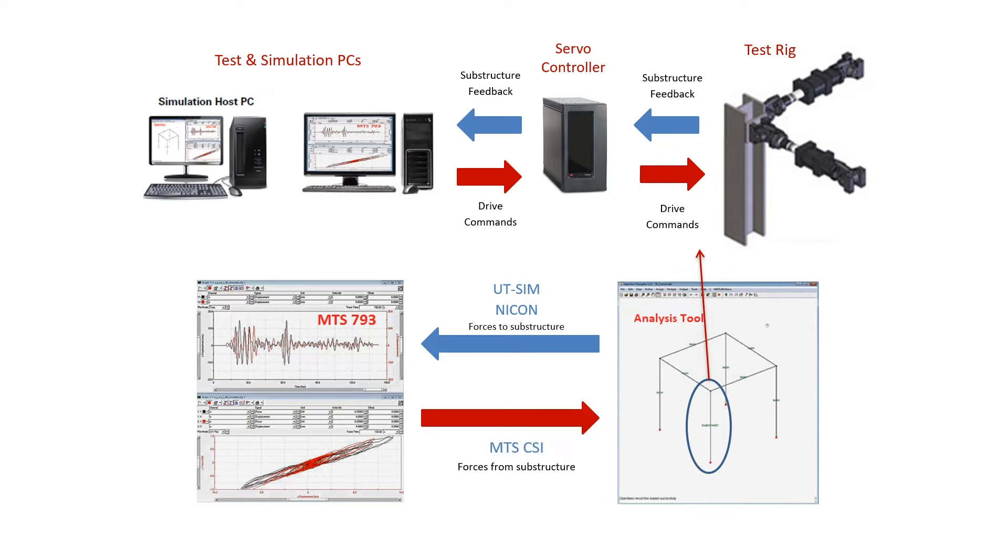The final software piece is the MTS Computer Simulation Interface, known as CSI for short. CSI is another middleware program that is used to communicate data and commands from the MTS 793 control software back to the modeling program. The communication between the model and the MTS 793 software is repeated for each time step in the command waveform.